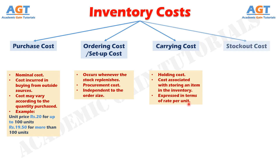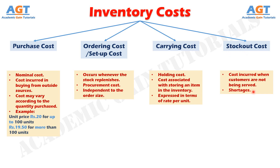Component number four is Stockout Cost. Stockout cost is the cost which incurs when customers are not being served. These costs imply shortages. If stockout is internal, that means some production is lost internally, resulting in idle time for man and machines. If stockout were external, it would result in potential sales loss or loss of customer goodwill. When the new shipment arrives, a customer who was denied earlier would be immediately supplied the goods, but it would involve costs like packaging costs and shipment costs.